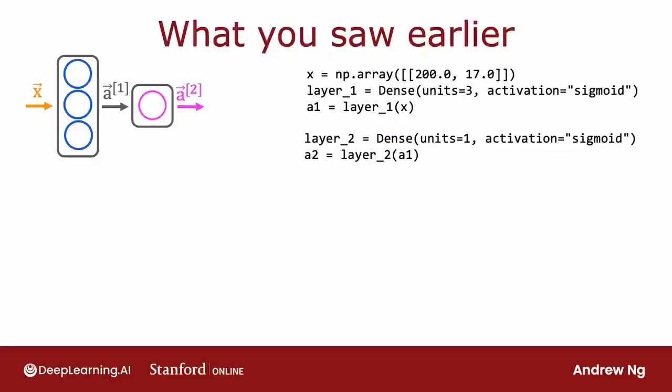What you saw previously was, if you want to do forward prop, you initialize the data X, create layer one like so, then compute A1, then create layer two, and compute A2. So this was an explicit way of carrying out forward prop one layer of computation at a time.